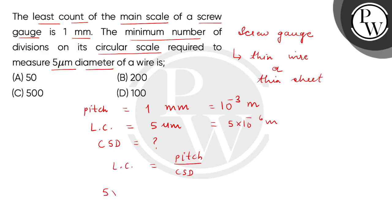The least count is 5 multiplied by 10 to the power of minus 6 meter. The pitch value is 10 to the power of minus 3 meter, and we have to find the circular scale divisions.